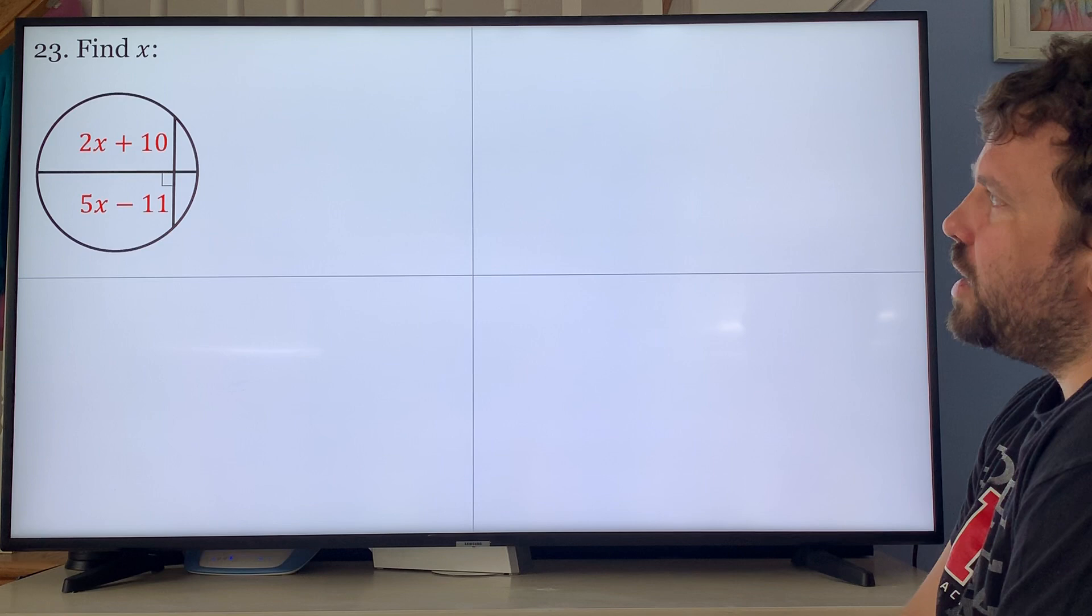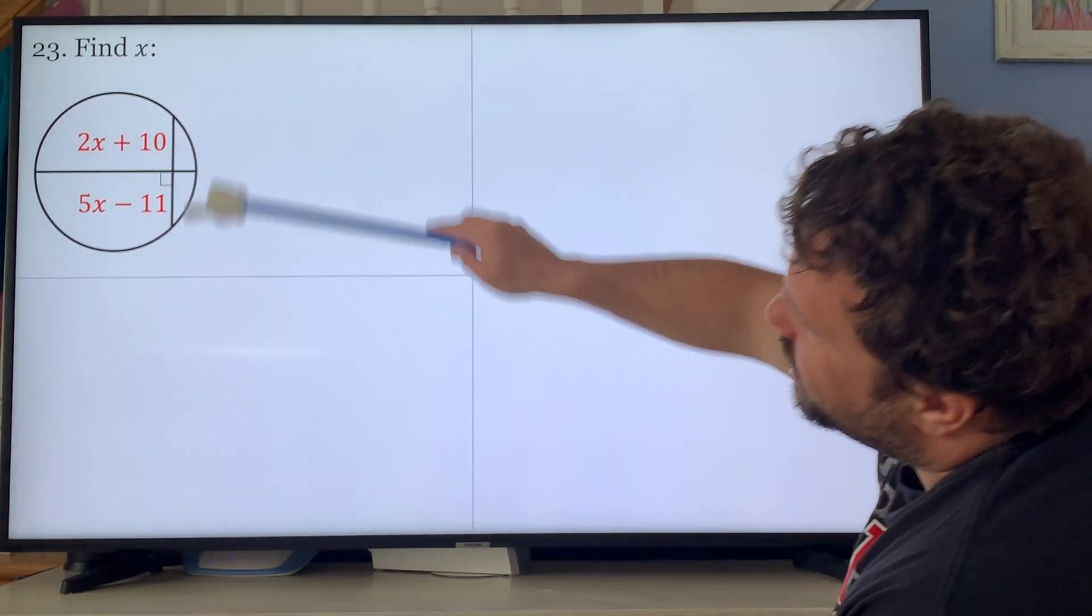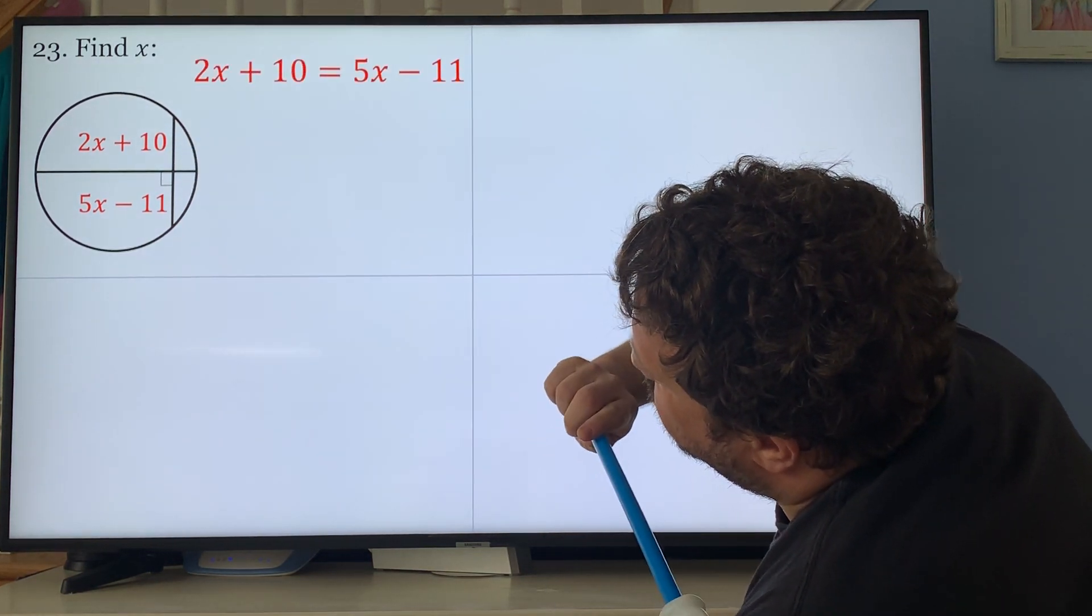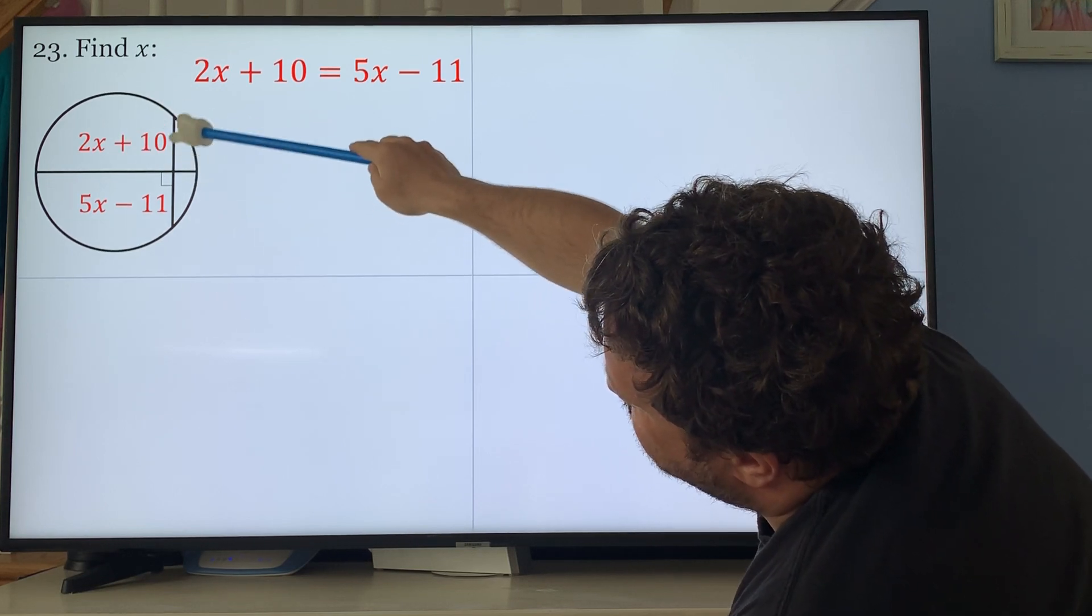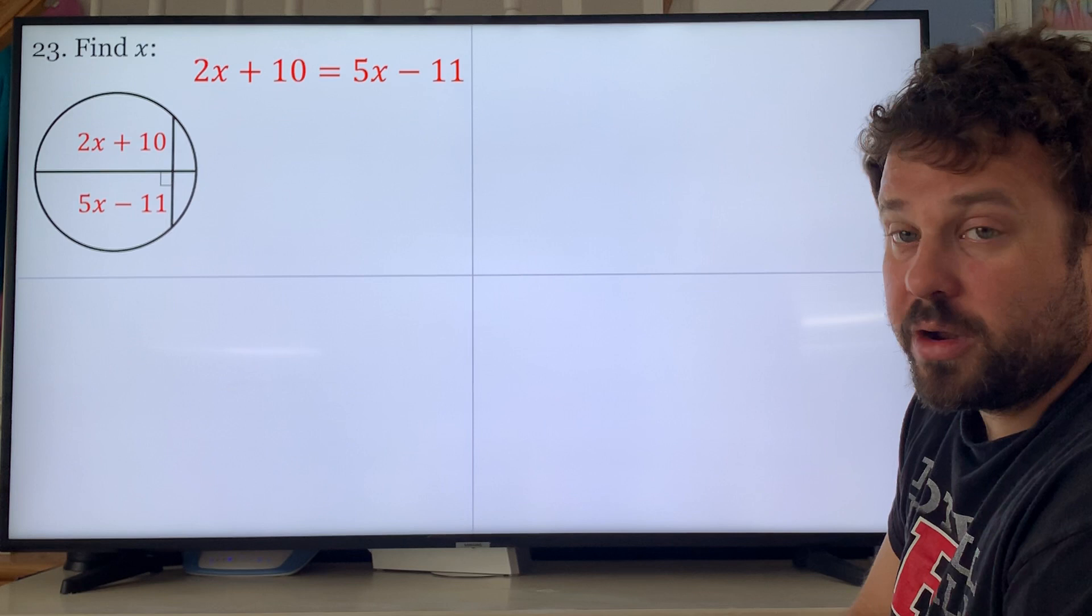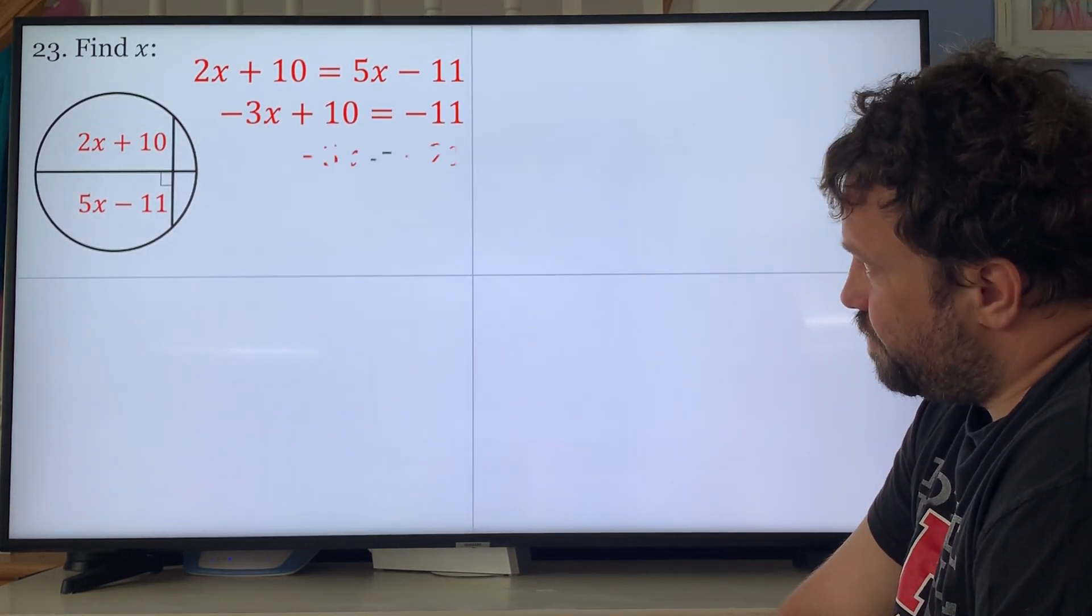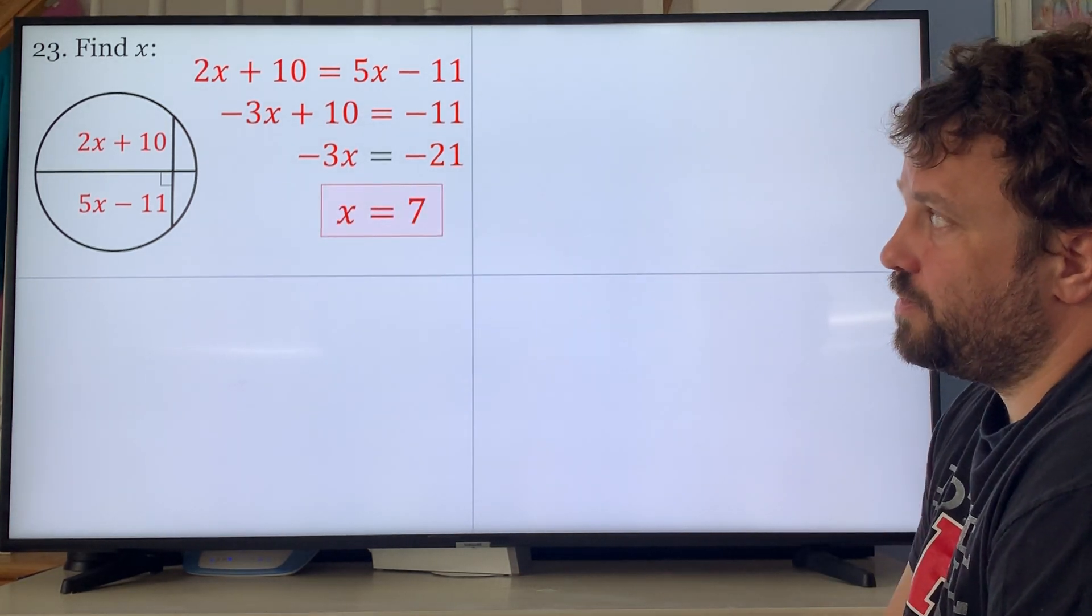Next one, find x. What do you know about those two segments? Because the chord, this is the diameter right here, because the diameter forms the right angle, these chords are equal. Negative 3x plus 10 equals negative 11. Negative 3x equals negative 21, and x equals a positive 7.